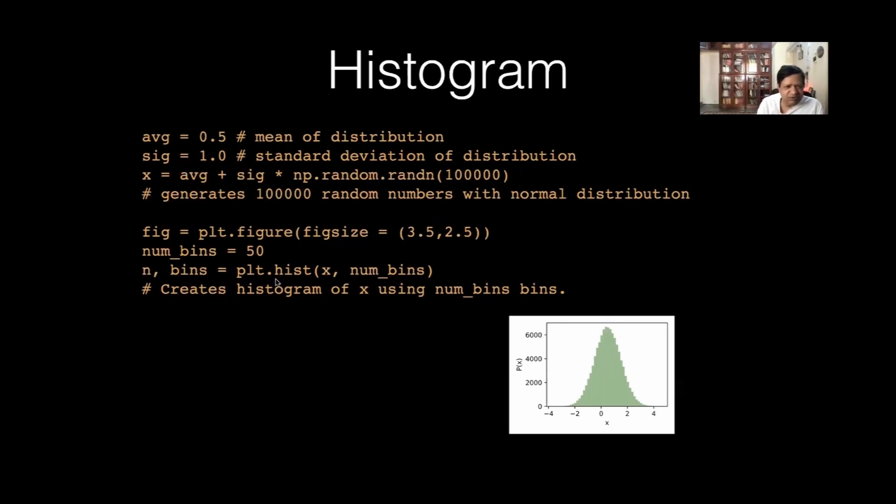Now, it is not very smooth because you choose 50 bins. You would, let us say, 500 bins with more points, then it will be nice Gaussian.